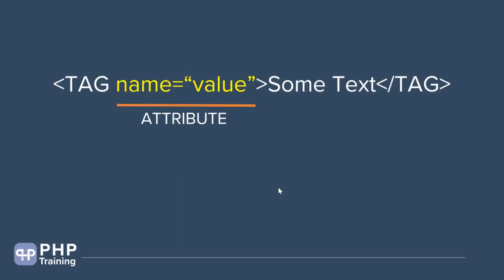Let's understand what is an attribute. Every element or tag can have additional properties. Attributes can also be called properties — meaning additional information about that element. If you have a tag and want to mention some additional properties, you give a name equals open-quotes value close-quotes. You must use names and values defined in the HTML specification; you cannot write whatever you want.